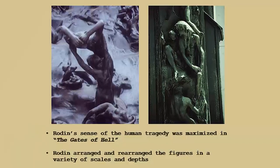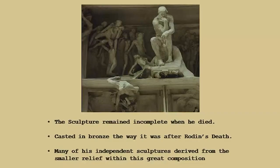Rodin arranged and rearranged the figures in a variety of movements and postures. 'The Thinker' was originally placed within this sculpture called 'The Gates of Hell.' The 'Gates of Hell' remained incomplete when he died; it was cast in bronze the way it was, after his death. Many of the individual figures derived from the smaller reliefs within this great composition. So on the one hand, 'The Gates of Hell' later derived a number of ideas for independent individual sculptures.